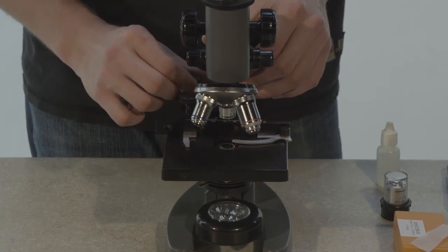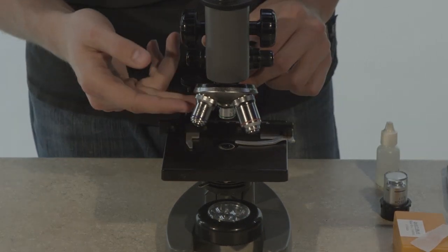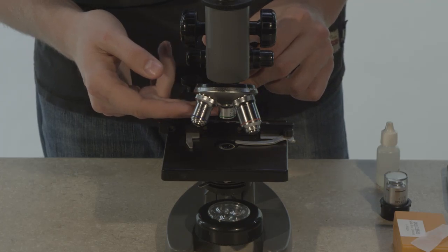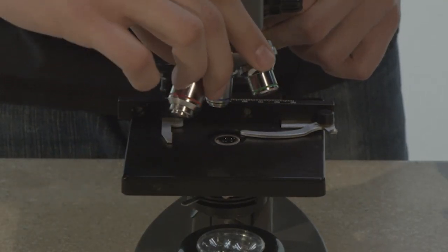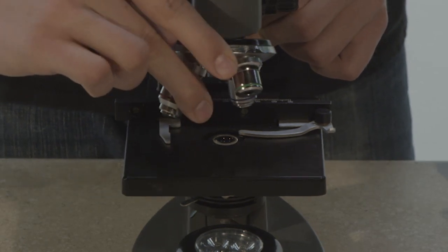Slide adjustment knobs are used for moving the slide around the base of the microscope. There are three objective lenses located on the microscope and each one is at a different magnification. These lenses can be rotated for viewing at a higher or lower magnification.